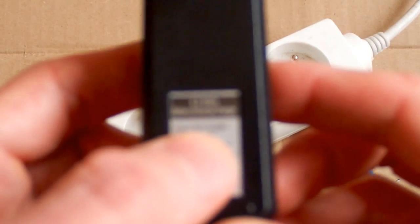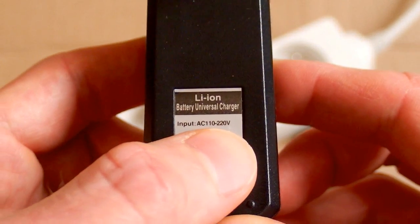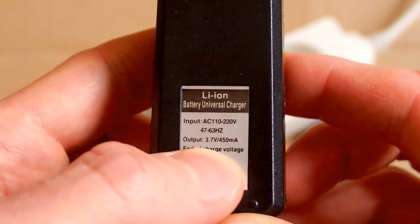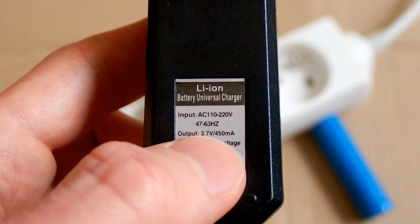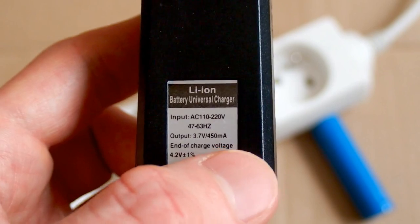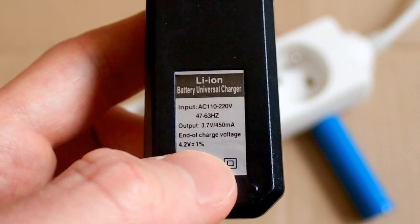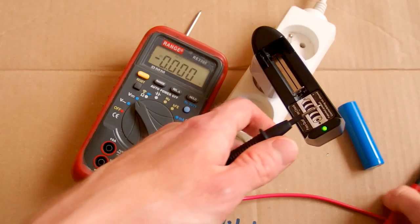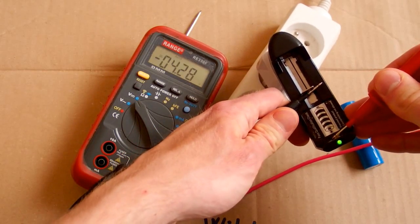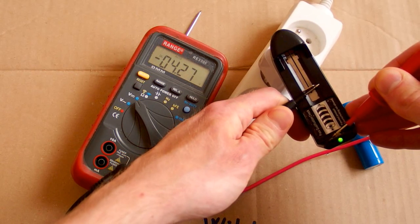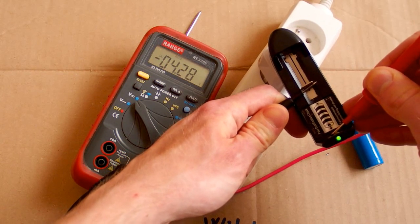It says the input voltage is 110 to 220 volts, 47 to 63 hertz. The output voltage is 3.7 volts, 450 milliamps, and the end of charge voltage is 4.2 volts plus minus 1%. The open circuit output voltage is about 4.27. A little bit too high, but still kind of okay.